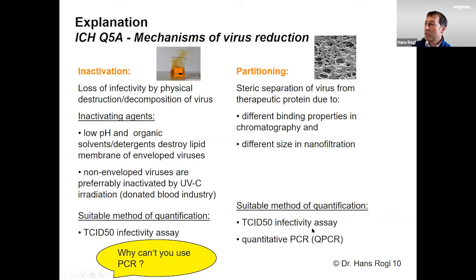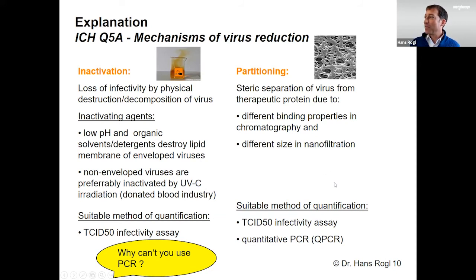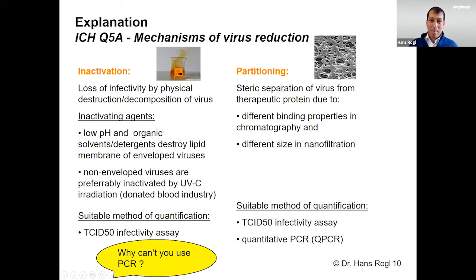In the partitioning category, you can use either the infectivity assay or quantitative PCR, because here you're separating the virus from the protein. Two mechanisms are used: either different binding properties in chromatography, or simply separation by size using a filter.